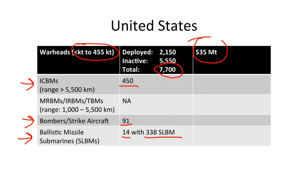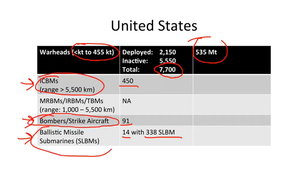So again, the United States has a triad — land-based, air-based, and sea-based. Along with Russia, the United States is one of the two largest nuclear arsenals in the world.